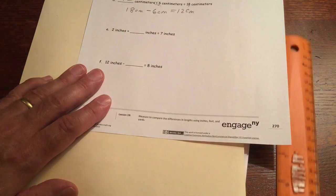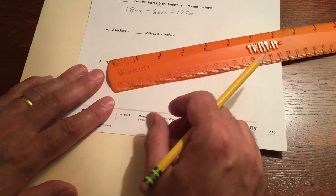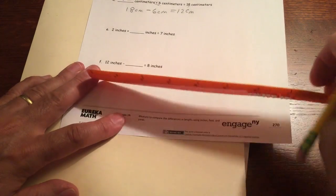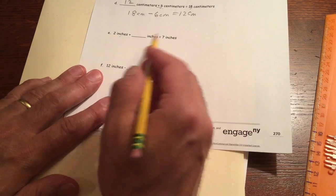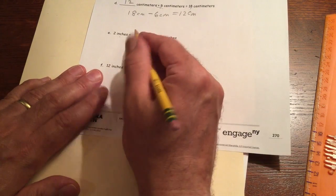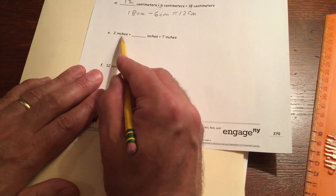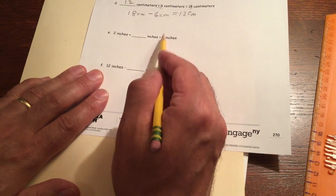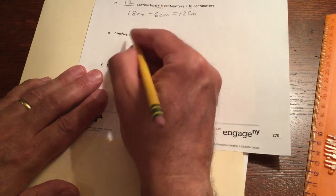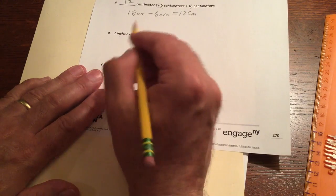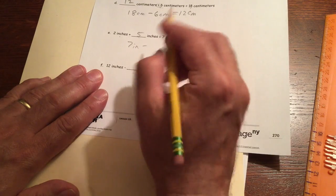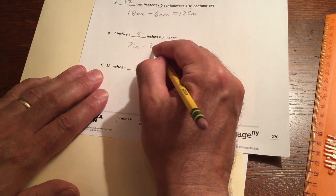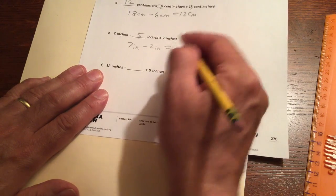And now we're using inches. And we just changed the units. We're doing the same thing, but we're just changing the units. They're inches. So now our inches are going to have INs instead of CMs. So we need 2 plus something equals 7. That's going to be 5. And now we check this with subtraction. And it's 7 inches minus 2 inches. 7 minus 2 is 5.